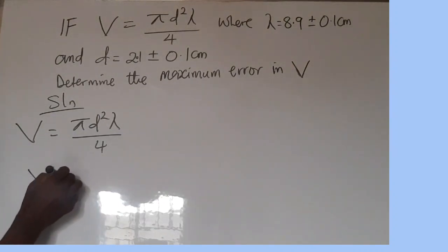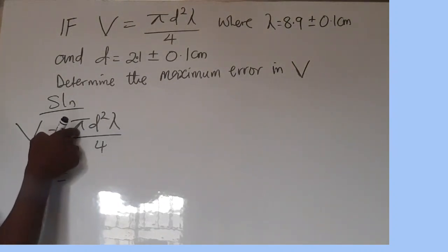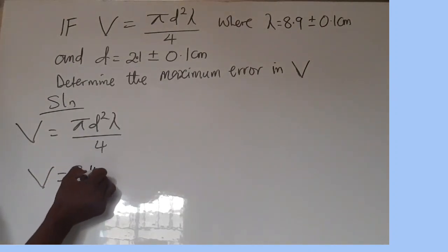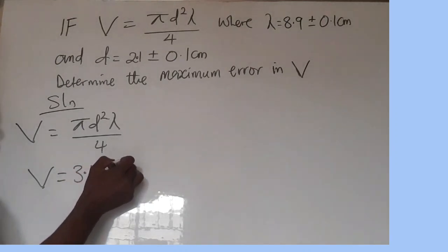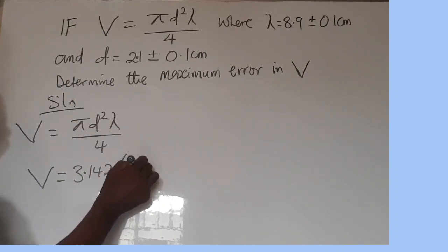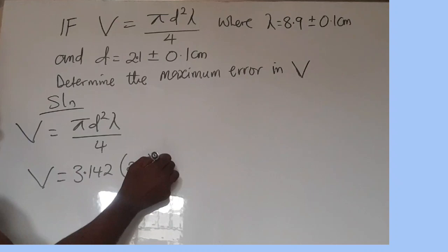So V is equal to the value of this π. We know that is constant, that is 3.142, times we multiply it to this d. Our d is 2.1, close bracket.